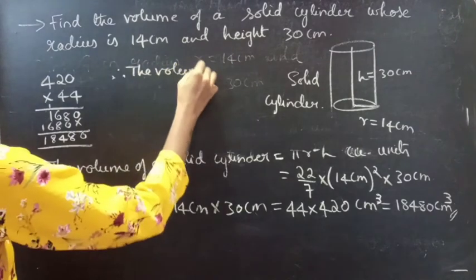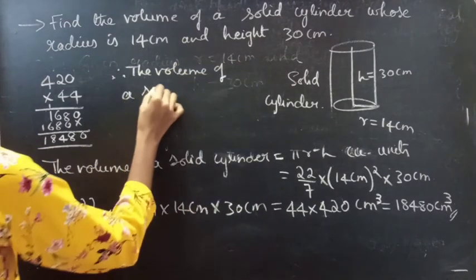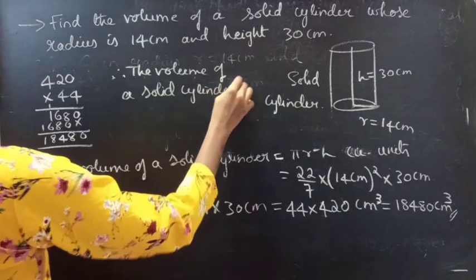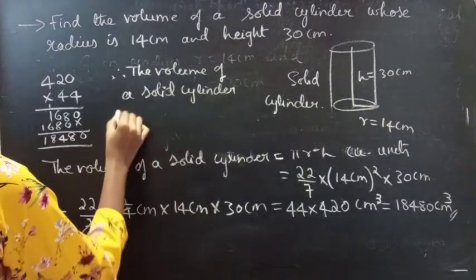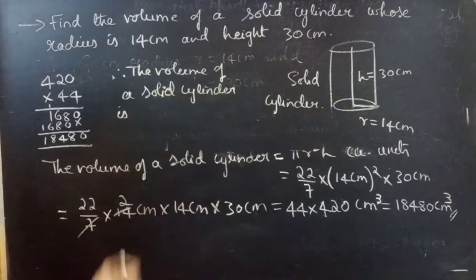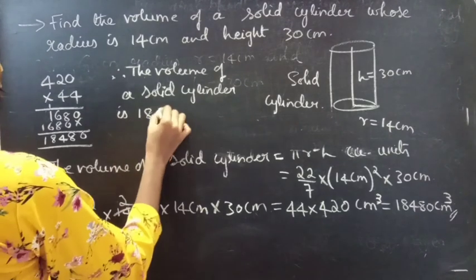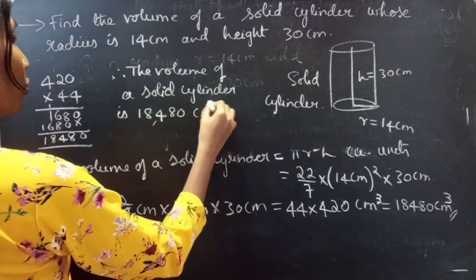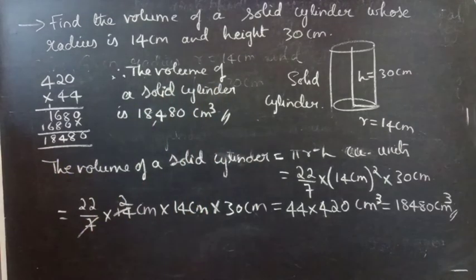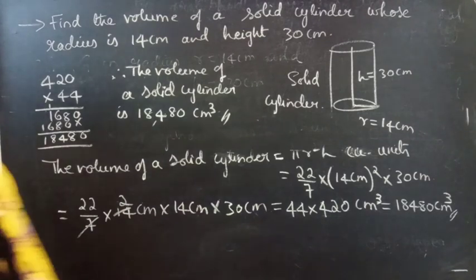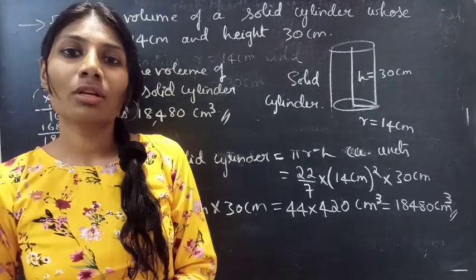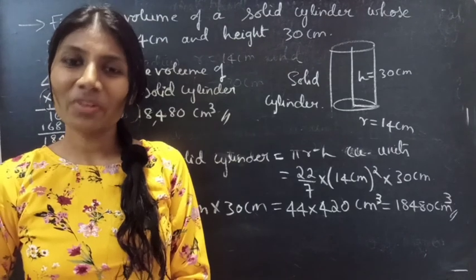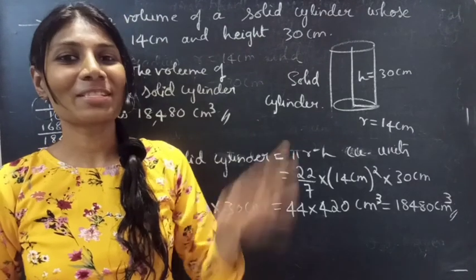So therefore the volume of a solid cylinder is 18,480 centimeter cube. This completes the problem. So we have seen a problem on volumes from mensuration in this video. Hope you will understand. We'll see you in the next video — until then, bye bye.